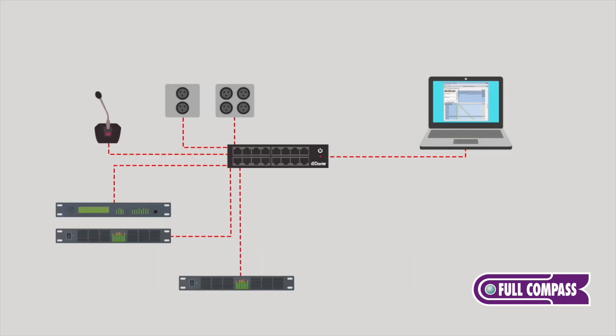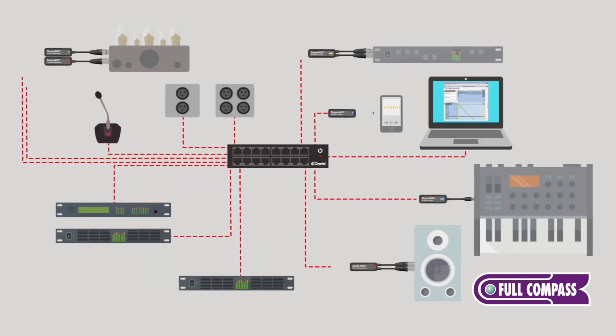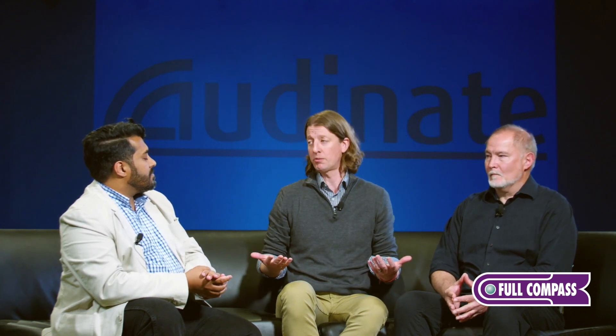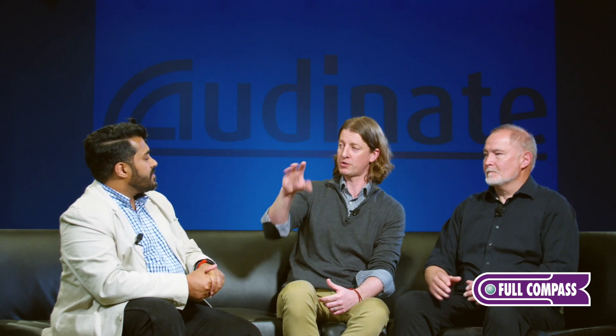If you want to diagnose whether the issue is a Dante-enabled device or possibly the network, you can put an Avio device on one end of a switch and an Avio device somewhere else on the network, then use Dante Controller to check that latency, check the connectivity, and really diagnose if you have a hardware problem or if there's something you need to reconfigure with the network. So they can be tremendous tools whether you're looking to distribute audio somewhere new, pull audio from something that is not Dante-enabled, or identify problems with your network.